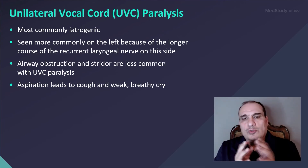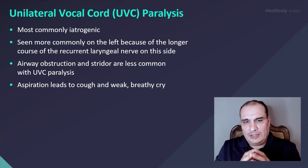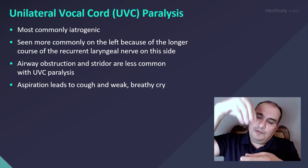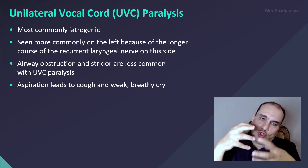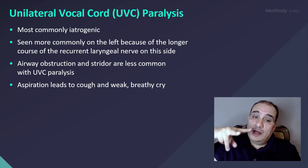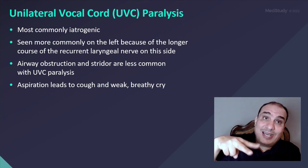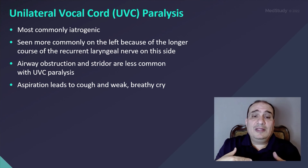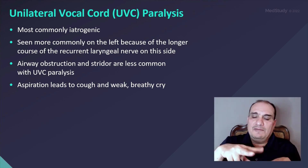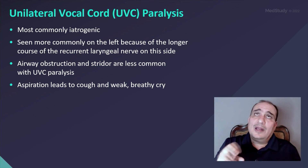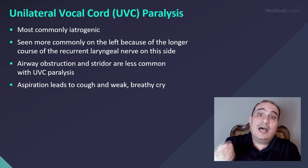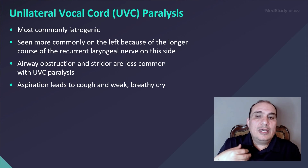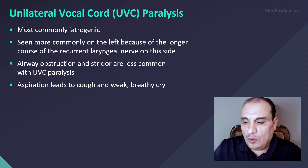An important point: the vocal cords are the most critical factor in preventing aspiration to our airway. If anything tries to enter the airway, the vocal cords close to protect it. If one or both vocal cords are paralyzed or have paresis, they cannot perform this function, creating a high risk of aspiration. You may see aspiration with vocal cord paralysis leading to coughing, weakness, and a breathy cry.